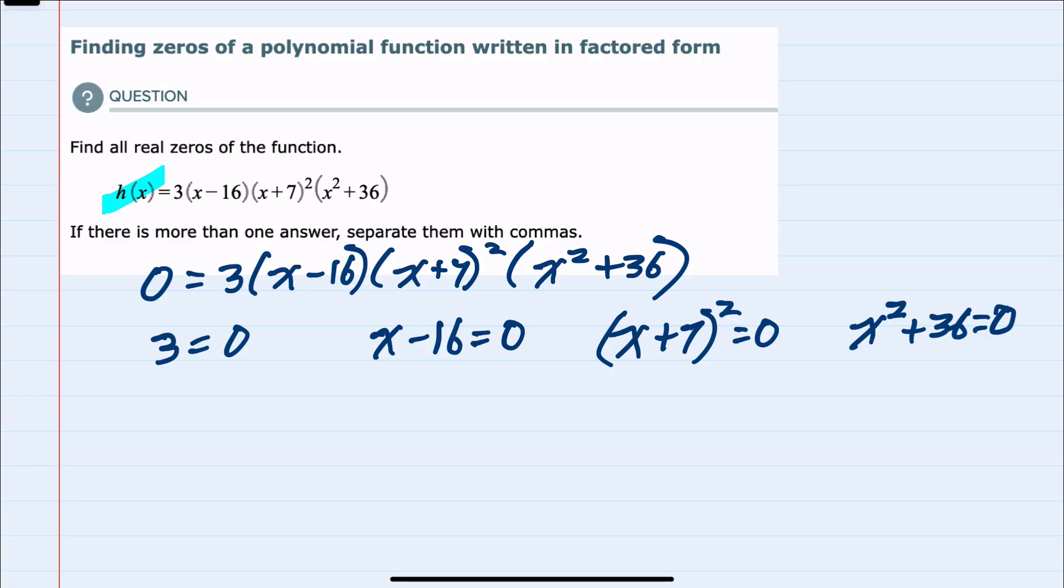Starting with the first one, we see 3 = 0 is not possible, so that's not going to give us any solutions. For the second, x - 16 = 0, we can solve this by adding 16 to the other side. That gives us a solution where x = 16, that's our first solution.